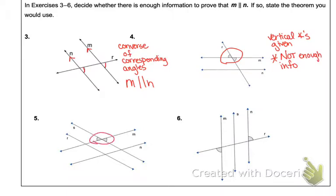On number five, that's the same thing. Those are vertical angles, so again, it's not enough information.